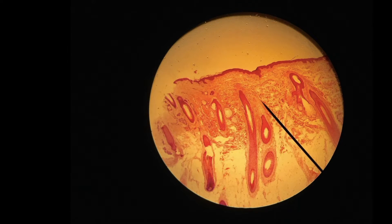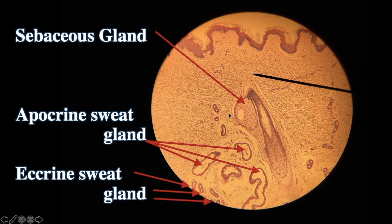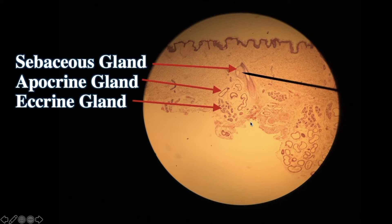Can you identify where a sebaceous gland would be in this slide? One, two, three — these are all sebaceous glands. Here's a hair follicle, and right next to it, the cells are filled in — that's a sebaceous gland.